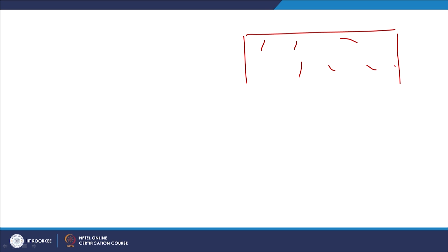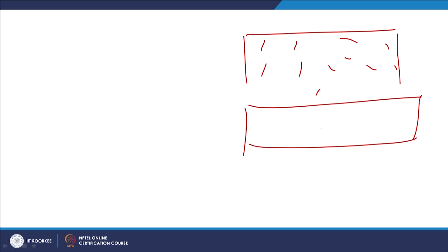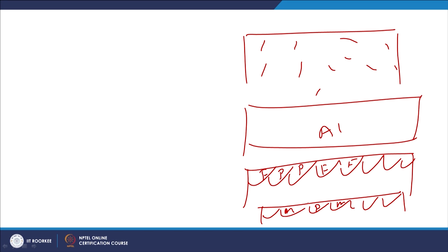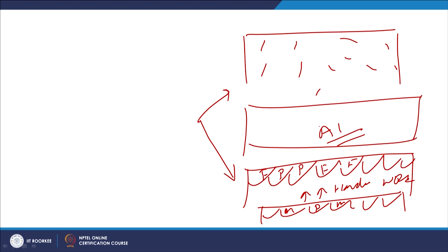Initially in aluminium alloys, if we had precipitates like this, these will be absent in the FSP zone and only the aluminium matrix will be visible. While in case of steels, initially if we had a mixture of ferrite and pearlite at the surface, after FSP it will get transformed primarily into martensite and pearlite. The formation of martensite and pearlite at the surface leads to improvement in hardness and improvement in wear resistance. So FSP of heat treatable aluminium alloys can lead to reduction in hardness, while FSP of steels can lead to significant improvement in hardness and wear resistance.